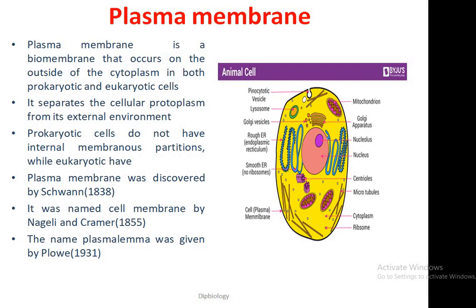Prokaryotic cells do not have internal membrane partitions, while eukaryotic cells do. Plasma membrane was discovered by Schwann in 1838. It was named cell membrane by Nageli and Cramer in 1855, and the name plasmalemma was given by Pfeffer in 1931.